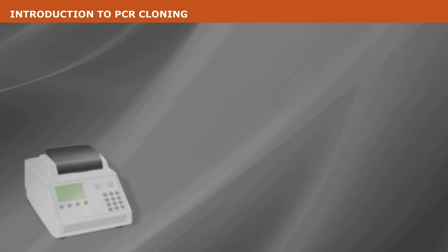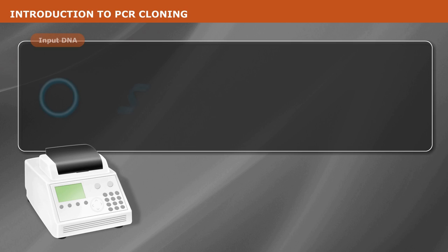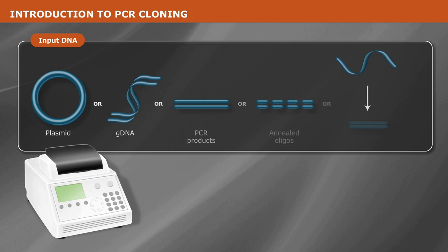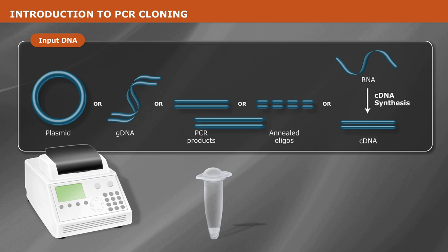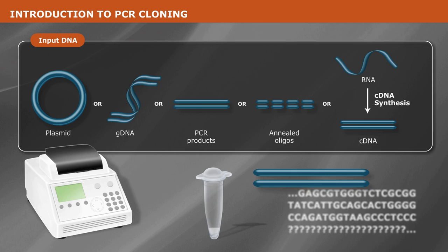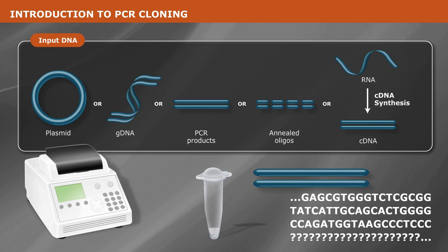PCR cloning is a common approach for the cloning of any DNA fragment of interest. This approach does not require a lot of input DNA and allows for the cloning of fragments for which the whole sequence may not be known.